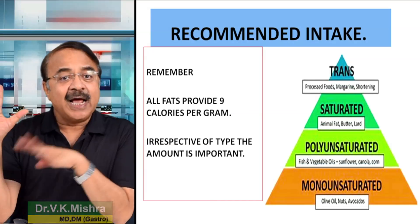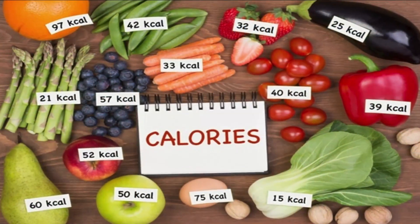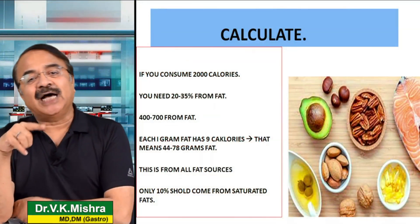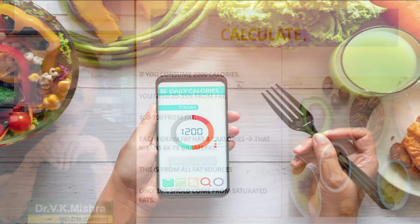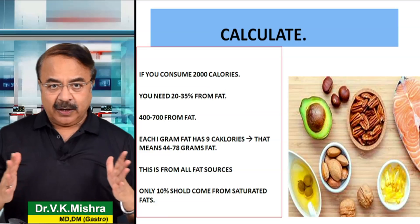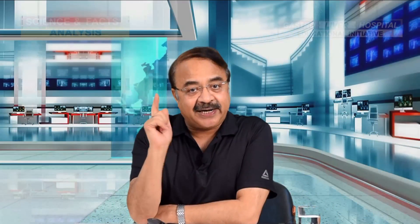तो इसलिए जो amount है that becomes one of the very important issues. अगर आप consume करते हैं 2000 calories, और ऐसा माना जाता है कि आपको 20-35% calories fat से चाहिए, इसका मतलब यह है कि आपको 400-700 calories fat से लेने की जरूरत है. आप जानते हैं कि एक gram fat में 9 calories होती हैं, इसका मतलब यह है कि आपको approximately 44-78 grams fat per day require होता है. यह जो fat है वास्तव में आपको सभी sources से लेने की जरूरत है, सिर्फ एक चीज़ ध्यान देने की जरूरत है कि trans fat बिलकुल नहीं होना चाहिए.